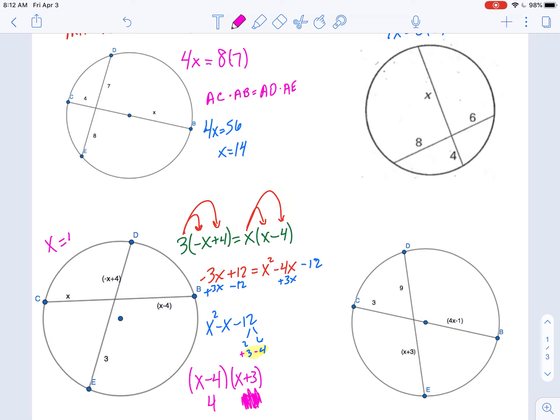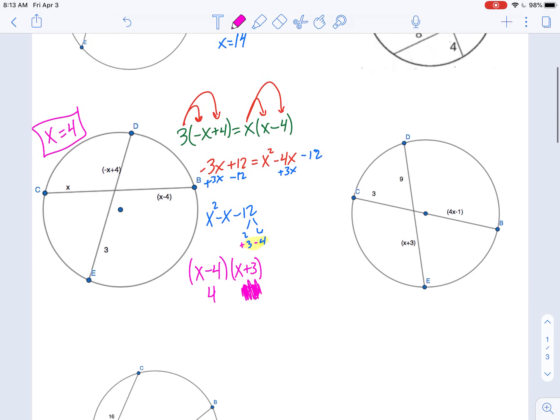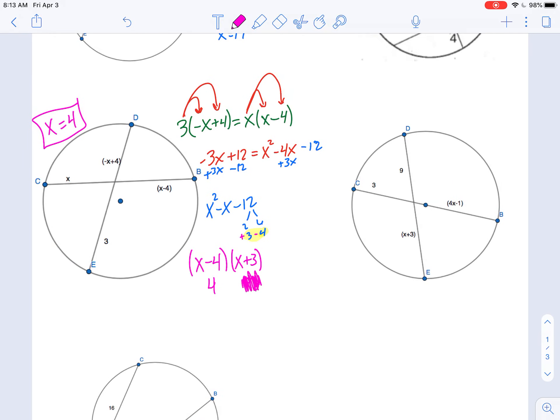And if I wanted to find the roots of this quadratic, it would be 4 and negative 3, and we're just going to take the positive number, the positive root. So x is 4.